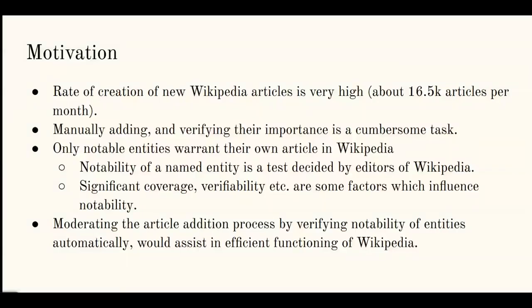Coming to the motivation of the problem statement, the rate of creation of new Wikipedia articles is increasingly high — about 16.5k articles per month — and manually adding them is not a scalable solution and is a cumbersome task. We should ensure that only notable entities, those which actually warrant their own article in Wikipedia, get added.